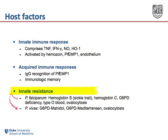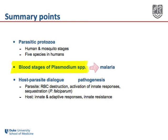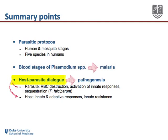These data collectively highlight the fact that pathogenesis arises from a complex dialogue between the host and the parasite. To summarize: malaria parasites are parasitic protozoa with both human and mosquito stages, and there are five species that cause malaria in humans. It's the blood stages of plasmodium infection that result in the syndrome we call malaria, and pathogenesis results from a host-parasite dialogue. On the parasite side, contributors include red cell destruction, activation of innate immune responses, and for plasmodium falciparum, sequestration of infected red blood cells in deep vascular beds. On the host side, mediators include innate and adaptive immune responses as well as innate genetic resistance to malaria. Thank you for visiting World Med School.